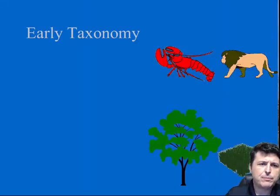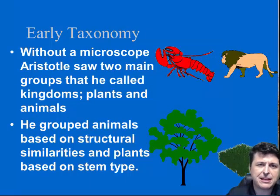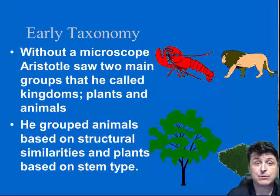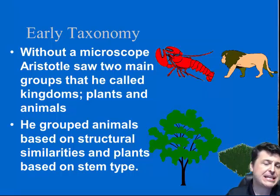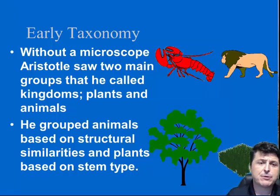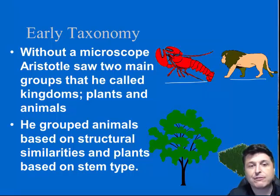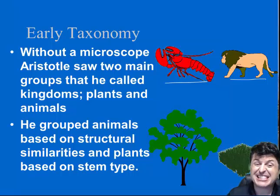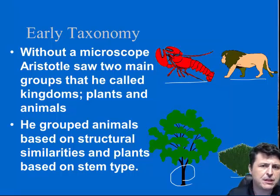Without a microscope, Aristotle wasn't able to differentiate into many different groups, but he could see the two big groups — plants and animals. In grouping them based upon their complexity, he further grouped them based upon structural similarities — like a water animal versus a land animal, an animal with a shell versus an animal with fur. With plants, he grouped based upon the stem — so a tree would have a large woody stem, while herbs would have a less complex stem.